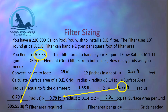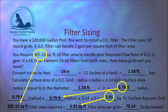Taking the total filter area required — 305.55 square feet — and dividing by 3.91 square feet per grid, we get 78.14 grids, which we round up to 79. We require a quantity of 79 nineteen-inch grids in order to turn over 220,000 gallons in 6 hours at a flow rate of 611.11 gallons per minute.